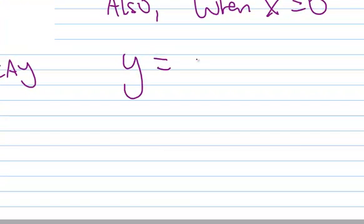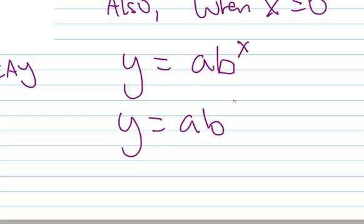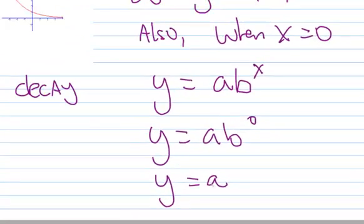So if you had your function, Y equals A times B to the X, if X was 0, let's just put that in a minute, anything to the 0 power is 1, and then you get your A value, which is your Y intercept.